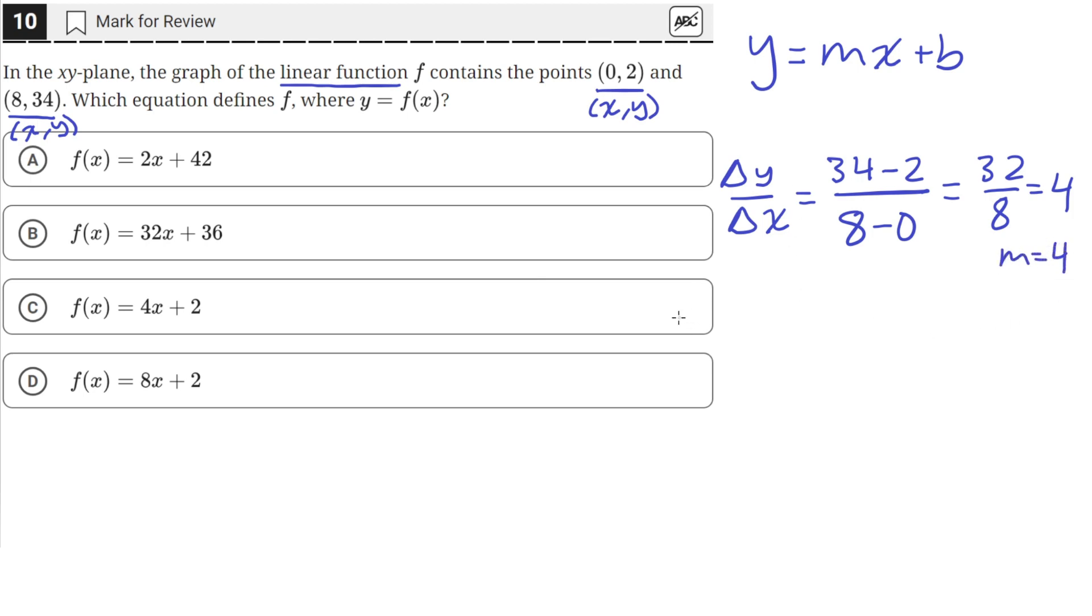The y-intercept we can find by plugging in one of the points back into our equation using the value of 4 for the slope. We have y equals 4x plus b, where x is the x-coordinate and y is the y-coordinate, and b is the y-intercept.